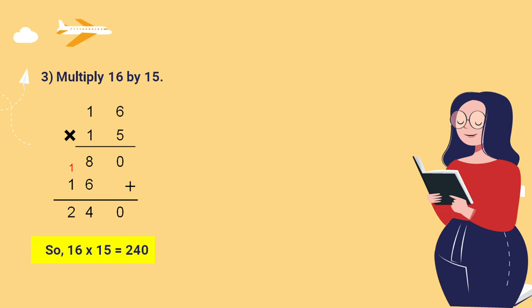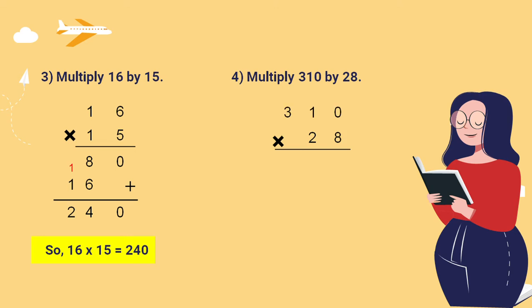Next question: multiply 310 by 28. So 310 times 28. First step: 8 times 0 equals 0, 8 times 1 equals 8, 8 times 3 equals 24.